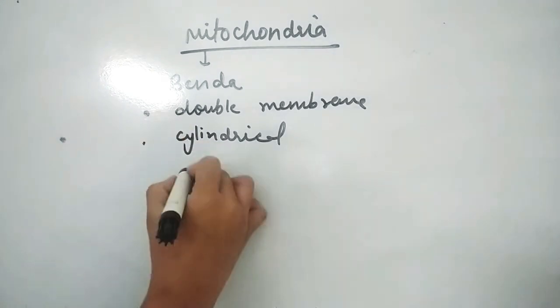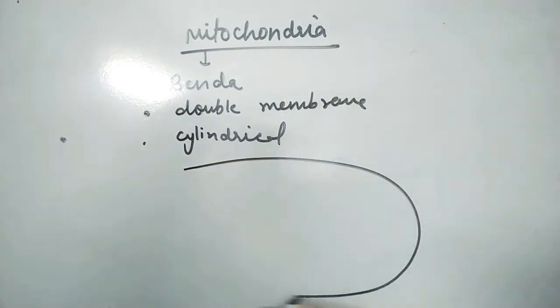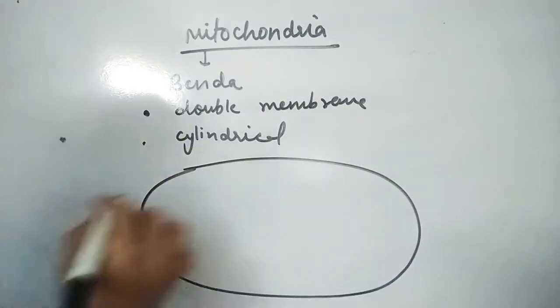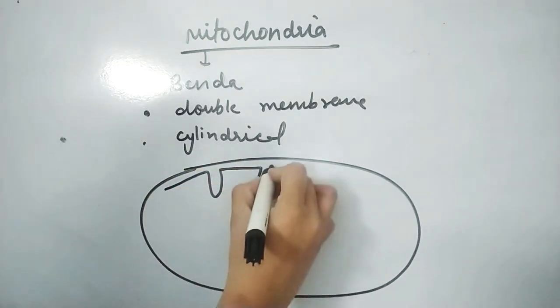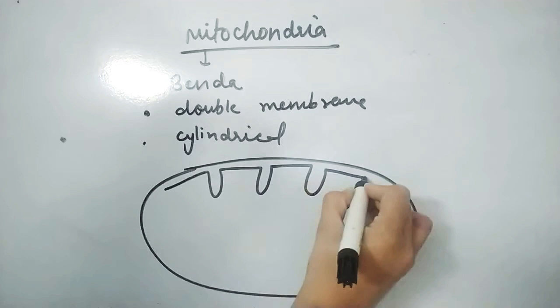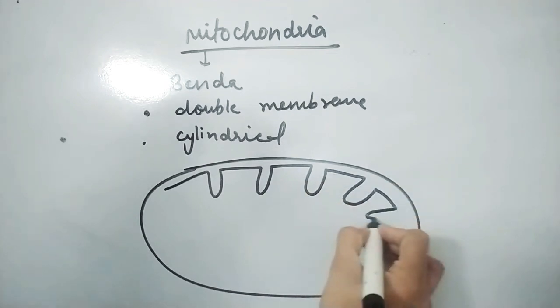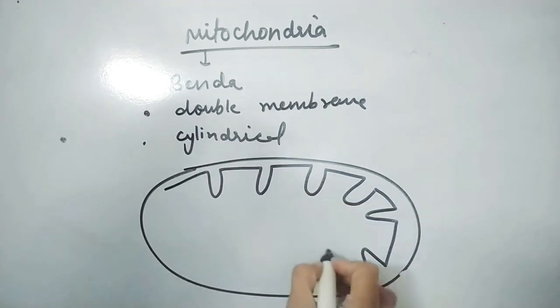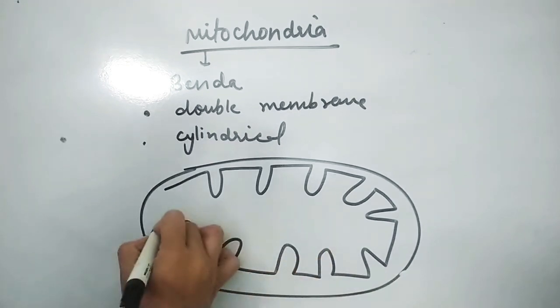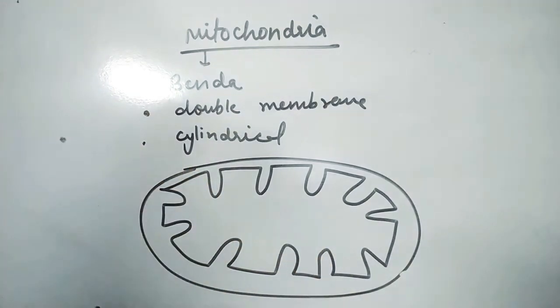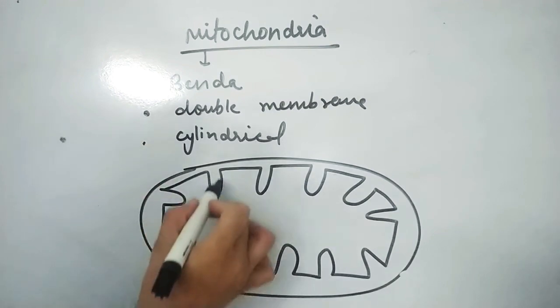It has a double membrane structure: outer membrane and inner membrane. The inner membrane is internally folded. This folding of inner membrane is called cristae or cristae. It increases the surface area.